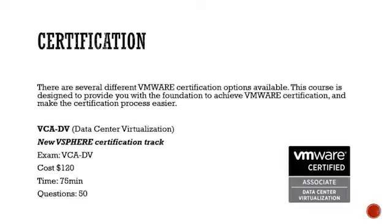Certification is a big point for a lot of people in IT. Some of you may be here to understand virtualization and VMware, or you might be here to get certified. The great news is you can complete this program, do the review questions and answers we provide, and go sit a supervised exam to become VMware certified — that would get you the VCA-DV certification, which is a VMware associate level certification for data center virtualization. It's a brand new certification track, the exam is VCA-DV, the cost is $120, and you get about 75 minutes for 50 questions.